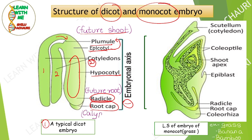These root caps are called calyptra. Examples of dicot plants include mango, apple, and rose.